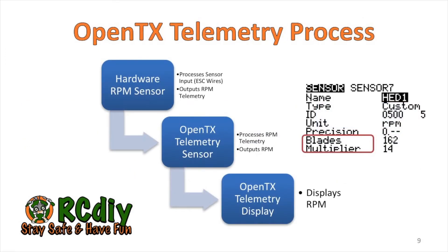Now that we know how to calculate the head speed using the motor's RPM and gear ratio, we can adapt this information for OpenTX. The OpenTX RPM telemetry sensor has a number of configurable parameters, but does not explicitly have a gear ratio parameter. What it has instead are configurable blades and multiplier values. The RPM value that enters the OpenTX RPM sensor is divided by the blade value and multiplied by the multiplier value. We can use these to calculate the gear ratio and head speed.